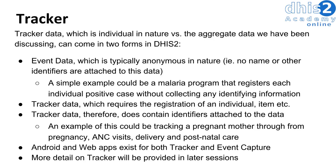The last method of data collection we will discuss is tracker. Tracker data is individual in nature, in contrast to the aggregated data we have normally been discussing. This can come in two forms in DHIS2: event data, which is typically anonymous with no identifiers attached, and tracker data, which requires the registration of an individual or object to be tracked. A simple example of event data could be a malaria program registering each positive case without collecting identifying information. Tracker data always has identifiers attached — for example, tracking a pregnant mother through antenatal and postnatal care requires registering details about the mother.